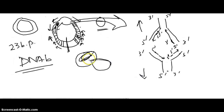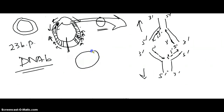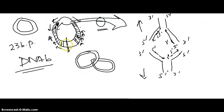After both forks meet and stop, the replication is complete — half the molecule was replicated from one side, and half from the other. The ligase enzyme then combines and ligates the two strands together. The result is two interlocked, concatenated daughter DNA molecules. These interlocked DNA molecules are freed from one another by the topoisomerase II enzyme. This completes the process of prokaryotic replication termination.